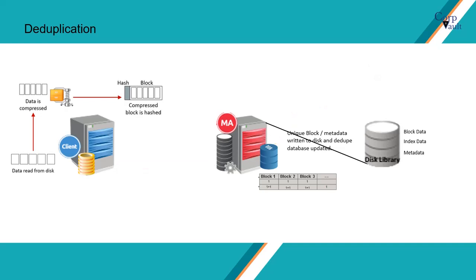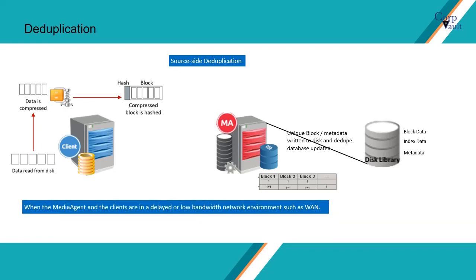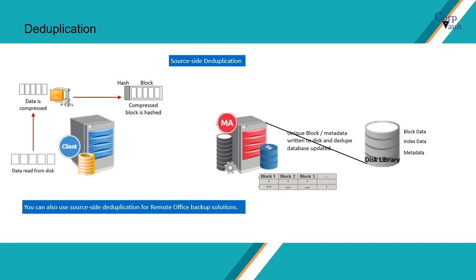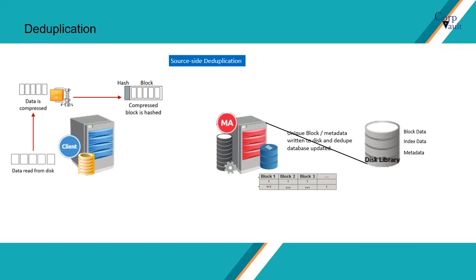The other way is to enable signature generation on the client side — in other words, source-side deduplication. Ideally, it is recommended to run the signature generation on the client, as it is both memory and resource intensive. The other factors would be when the media agent and the clients are in a delayed or low-bandwidth network environment. You can also use source-side deduplication for remote office backup solutions. Implementing this method reduces the amount of data that is transferred across the network.